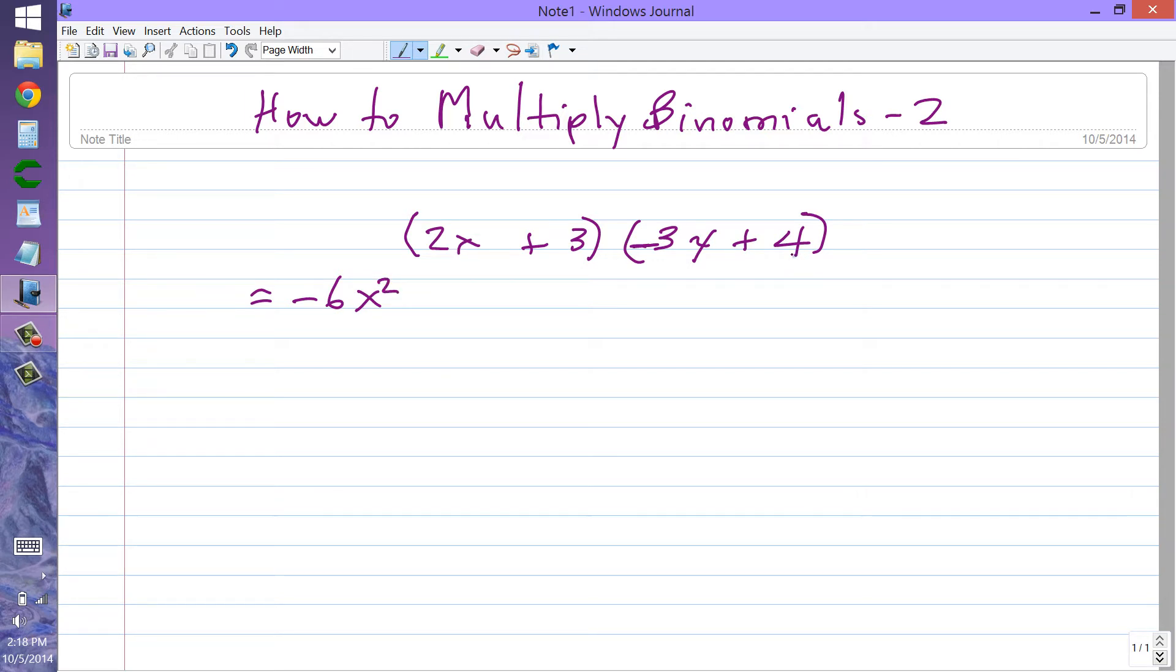2x times 4 will give us 8x. 3 times minus 3x will give us minus 9x. 3 times 4 will give us 12.